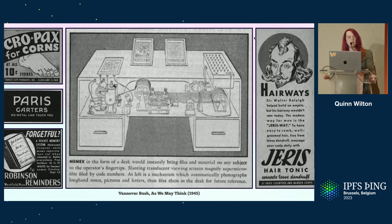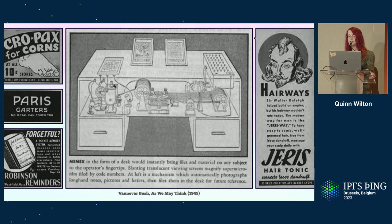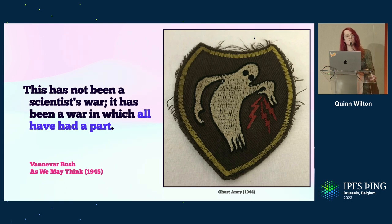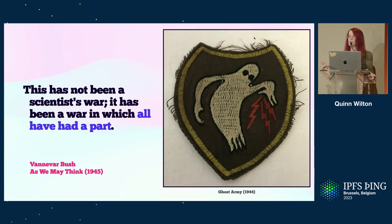Some of this vision came to pass, and it's impossible not to see the memex in the internet that we have today, but aspects of its design were lost along the way. I want to talk about the opening sentence of 'As We May Think': 'This has not been a scientist's war. It has been a war in which all have had a part.' It's obvious he's referencing the atomic bomb here, but it's his allusion to the non-scientists that I find interesting. My mind goes to the way the arts were repurposed towards the war effort.